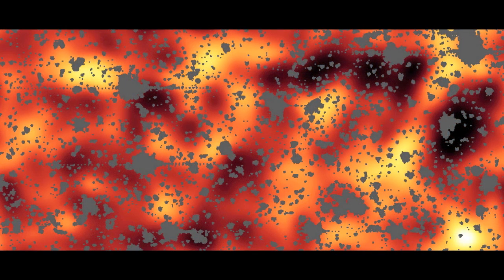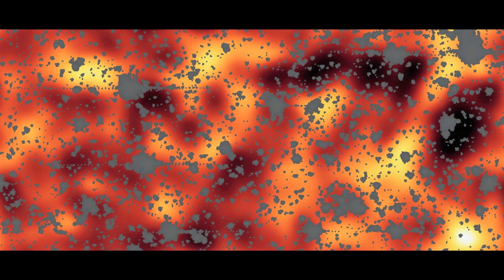After painstakingly masking instrument artifacts and subtracting all known sources of light from the foreground stars, galaxies and nebulae, astronomers discovered a faint glow that could not be attributed to any other objects in the image.